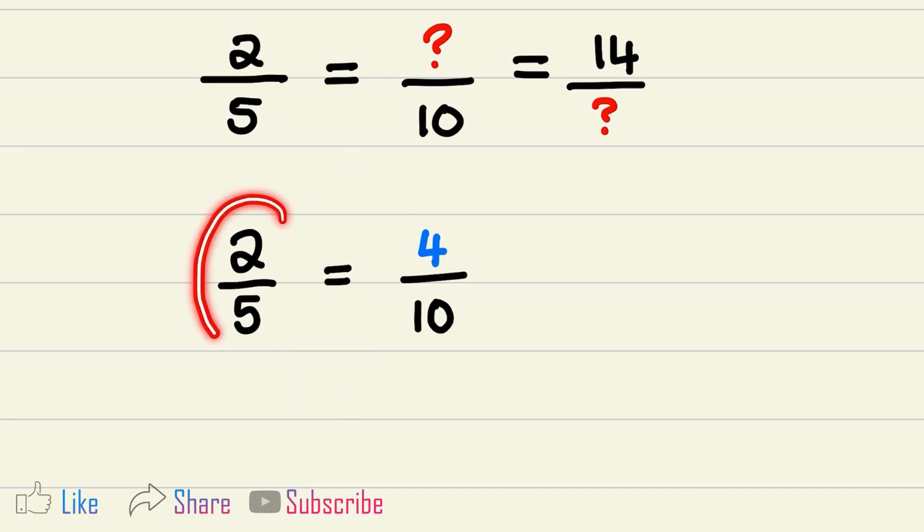So 2 over 5 is equal to 4 over 10. And what we have done is multiplied 5 by 2 and we did the same in the numerator.